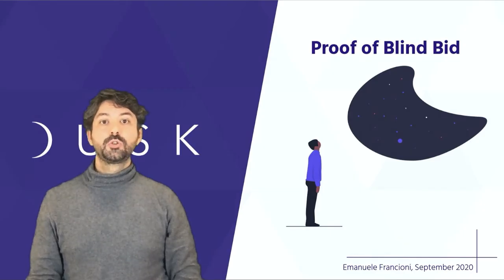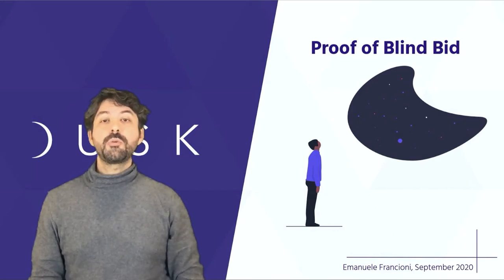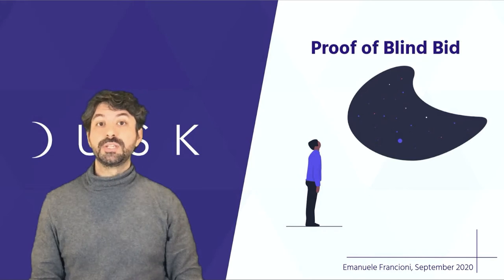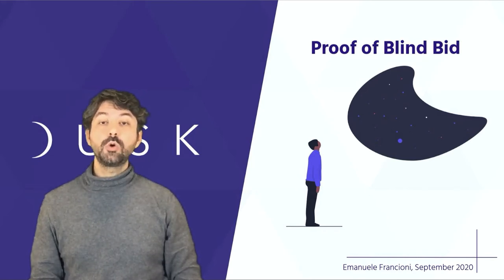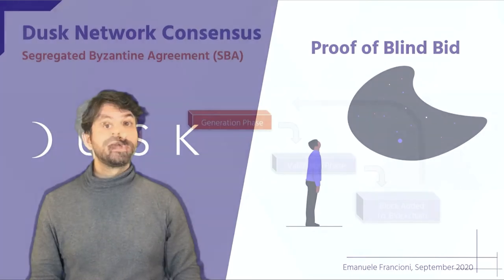Welcome. Today I'd like to talk about Proof of Blind Bid. Proof of Blind Bid is a fundamental building block of Segregated Byzantine Agreement, the decentralized algorithm that allows nodes to achieve consensus within the Dusk network.